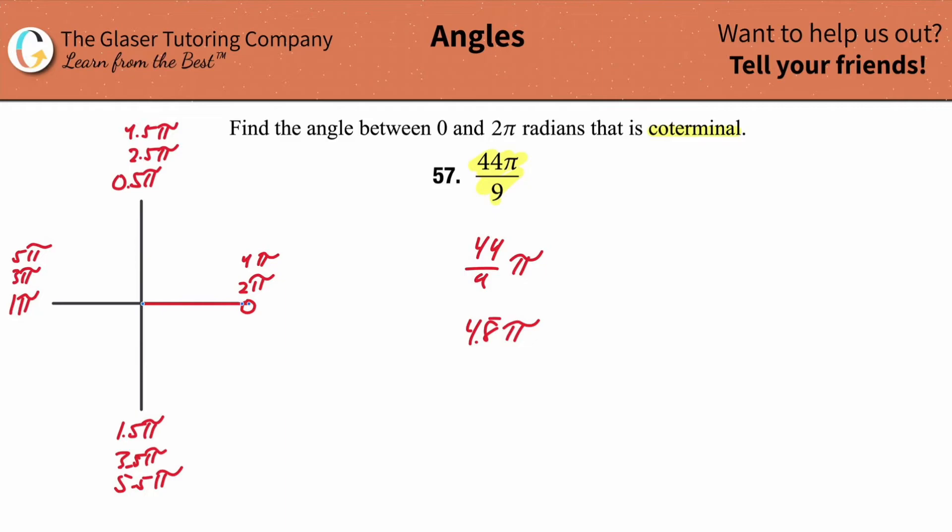We've got to rotate 4.8888 pi times. So we start at 0. Half of a pi. Full pi. 1 and a half pi. 2 pi. 2 and a half pi. 3 pi. 3 and a half pi. 4 pi. 4 and a half pi. 4.88 pi.